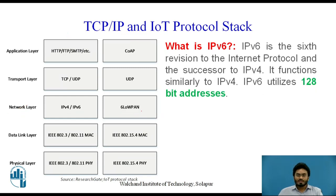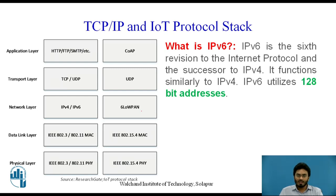IPv6 is the sixth revision of the Internet Protocol and the successor of IPv4. It functions similarly to IPv4 in assigning IP addresses, defining headers and frame formats, and setting up connection-less or connection-oriented communication. However, unlike IPv4, IPv6 uses 128-bit addresses, giving us 2 to the power of 128 possible combinations — an enormously huge number of IP addresses that can be assigned to devices.